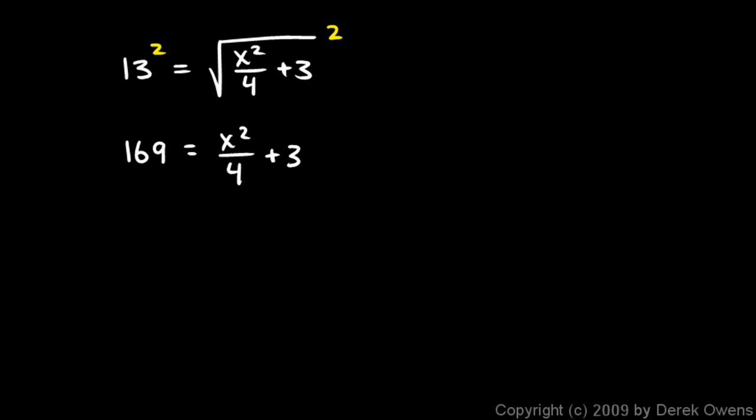I'm going to subtract 3 from each side, and that gives me 166 on the left equals x squared over 4. If I multiply both sides by 4, on the right, those cancel out, and I'm left with x squared all by itself. x squared equals 166 times 4. 166 times 4 is 664. Then to find x, I just take the square root of each side, and that gives me x equals plus or minus the square root of 664, which comes out to approximately 25.77. It doesn't work out to a nice round number. That's the point of this problem.